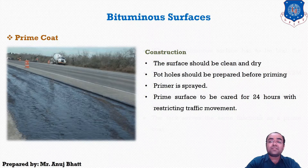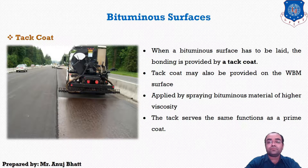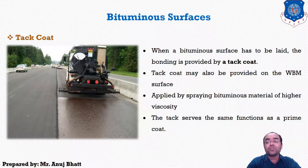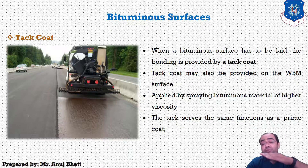The tack coat is applied when a bituminous surface has to be laid on an existing blacktop or cement concrete pavement, providing bonding. Tack coat may also be provided on a water-bound surface that has already been treated by a prime coat. Tack coat is usually applied by spraying bituminous material of higher viscosity, like hot bitumen, at a rate of 4.9 to 9.8 kg per 10 m². The main difference is that the prime coat bonds with the base course while the tack coat bonds with the surface coat.